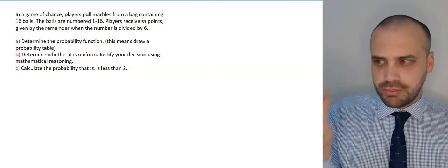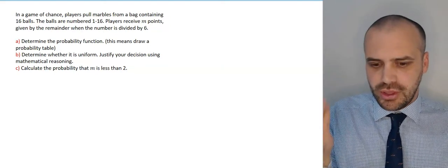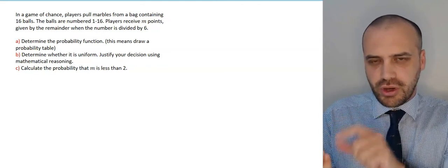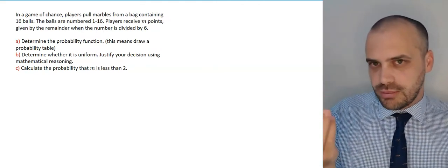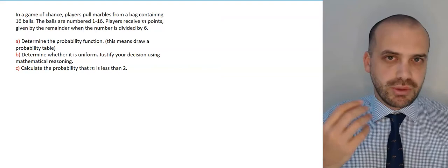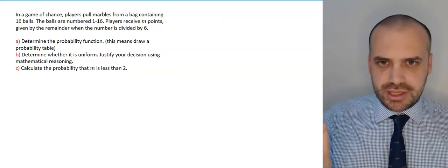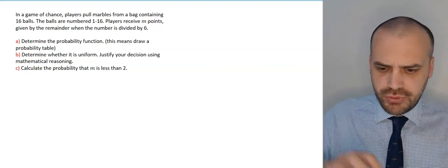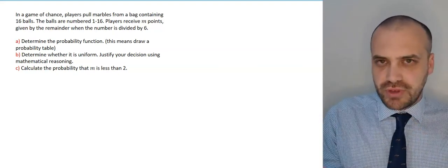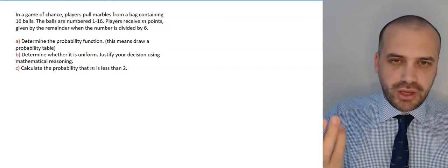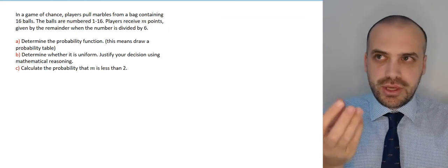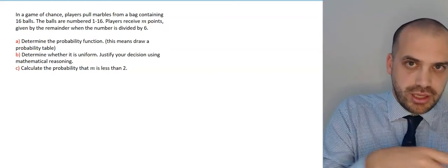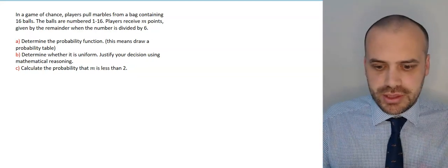When you pull the ball out, you don't get the number on it. You divide whatever that number is by 6, and then whatever the remainder is, that's the points you get. So if you pull the number 15 out, divide 15 by 6, you get 2 remainder 3 — you get 3 points.